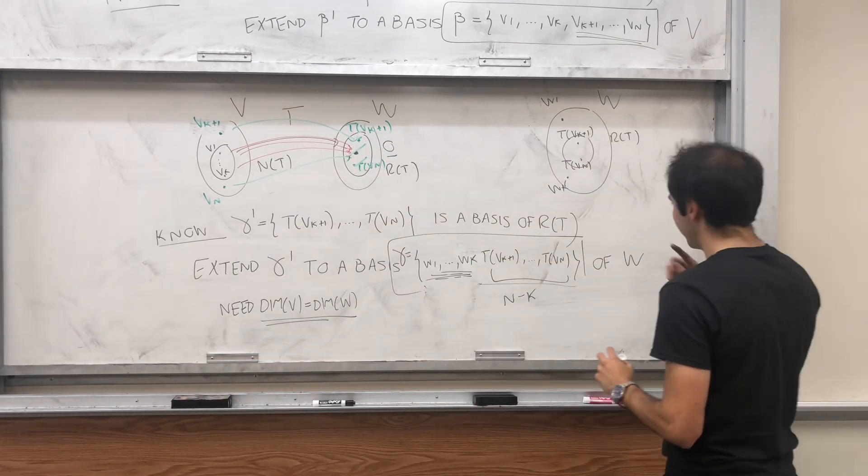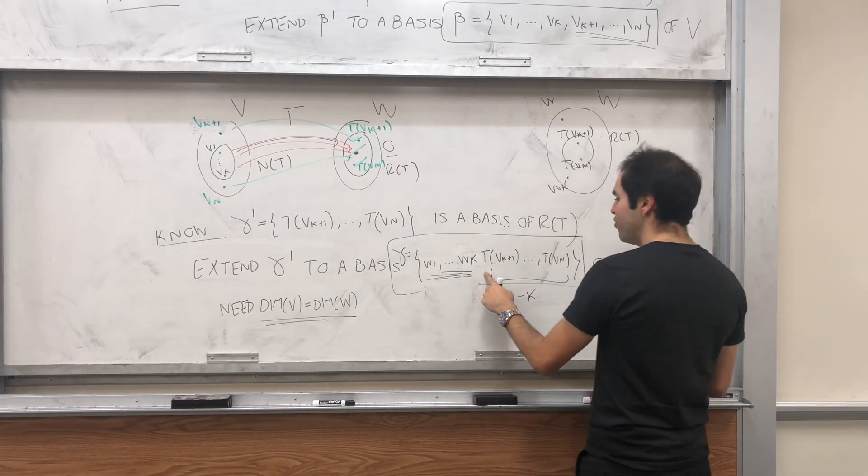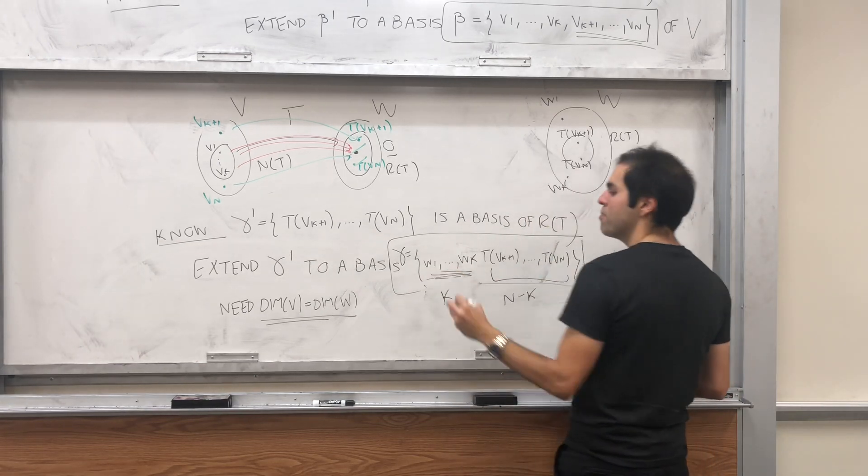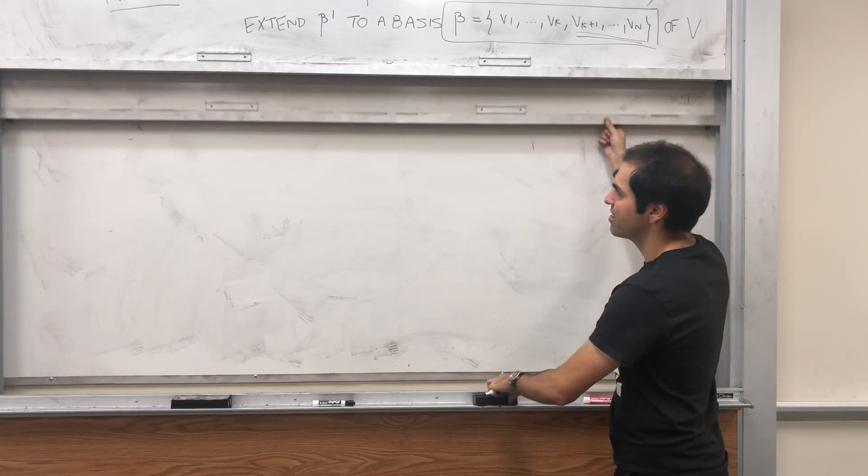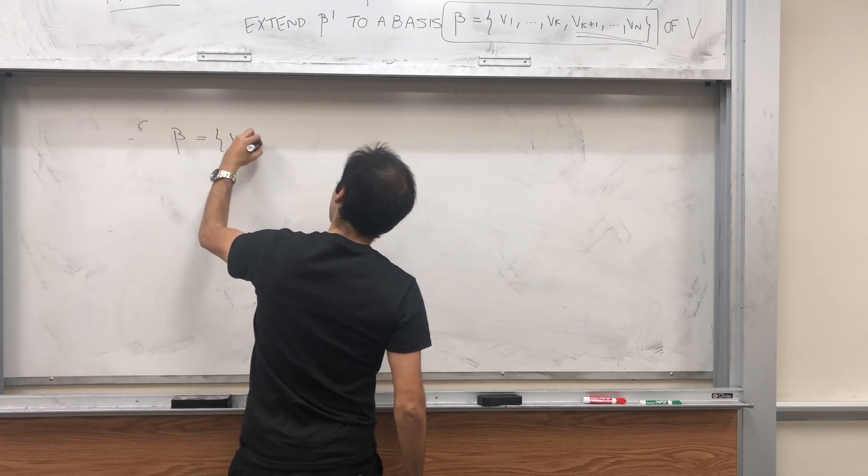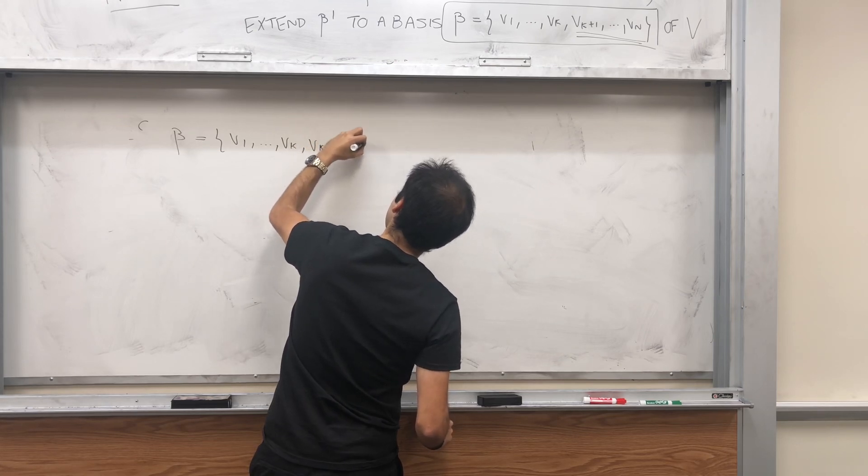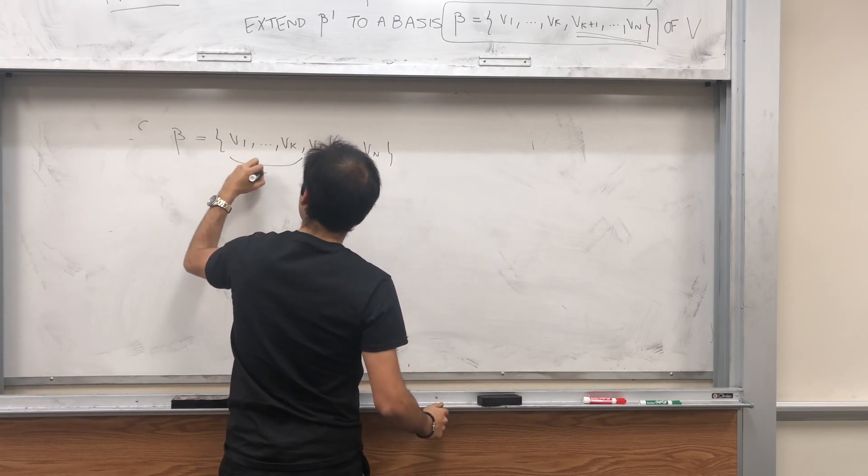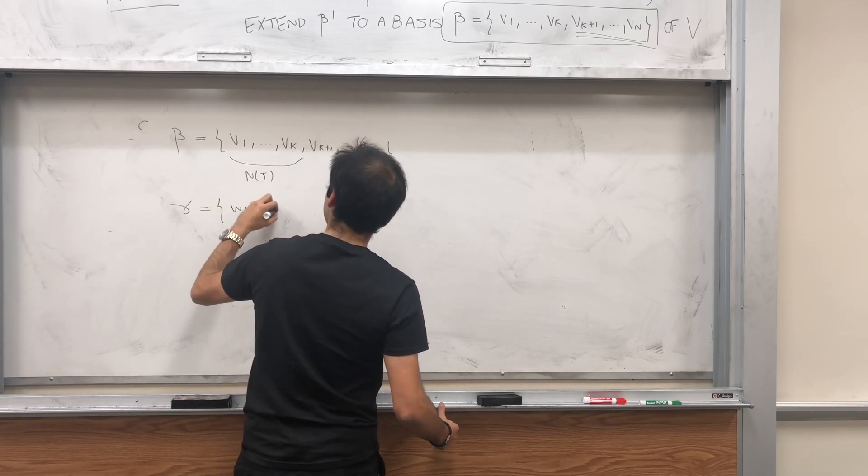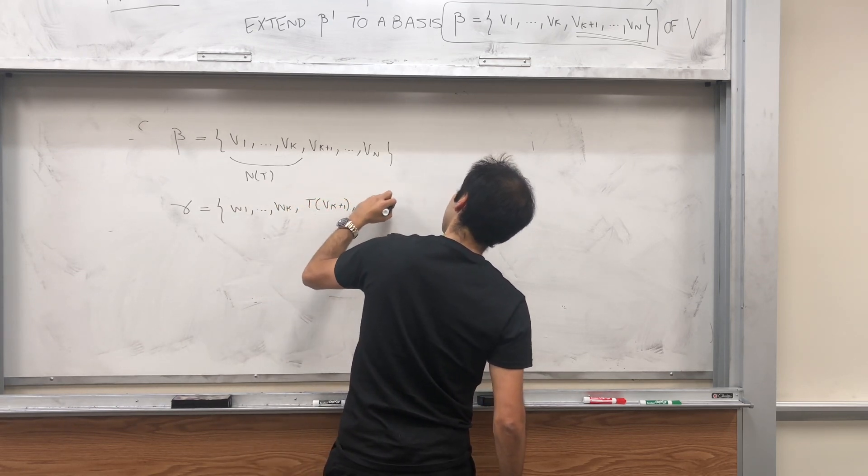Otherwise, it turns out this might not necessarily be true. We might not have enough vectors on one side or the other. So in particular, if you extend this to a basis of W, here we have n minus k vectors. And to complete this, we have k vectors. All right, so what do we have? We have beta, which starts with the null space up to vn. So this is the null space. We have gamma.